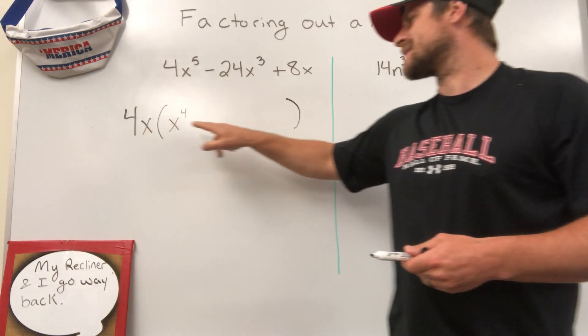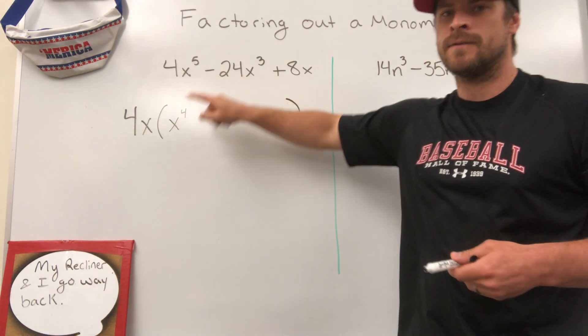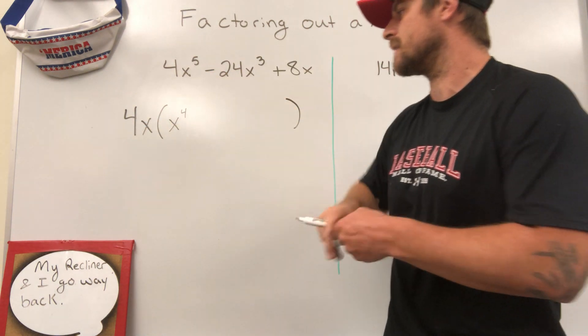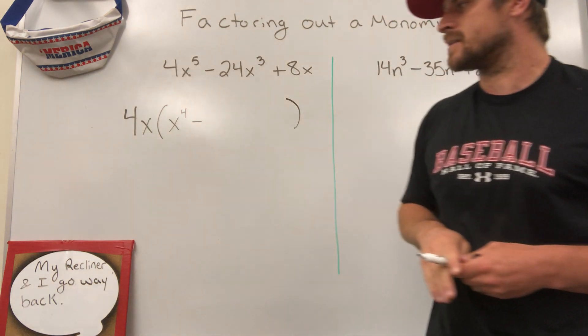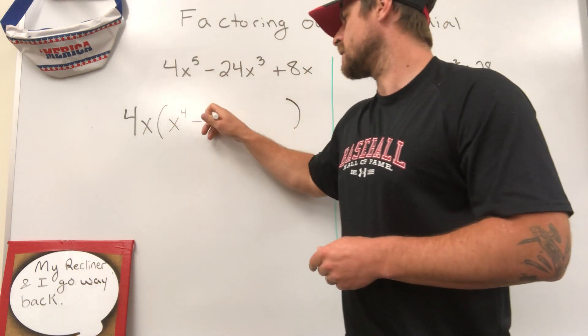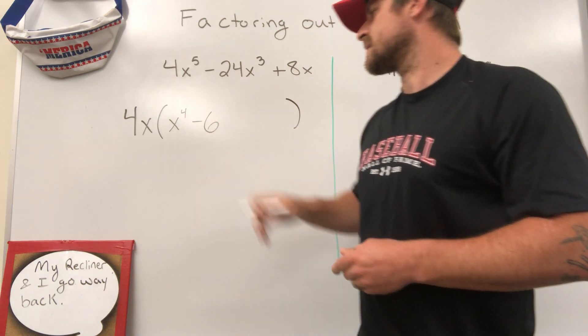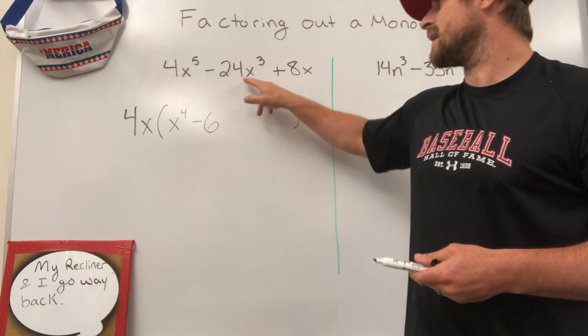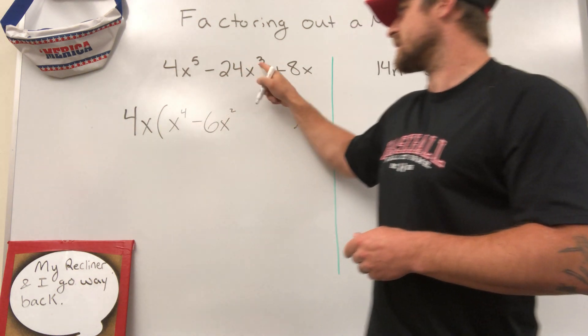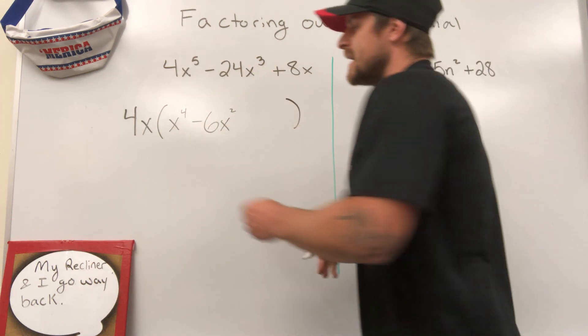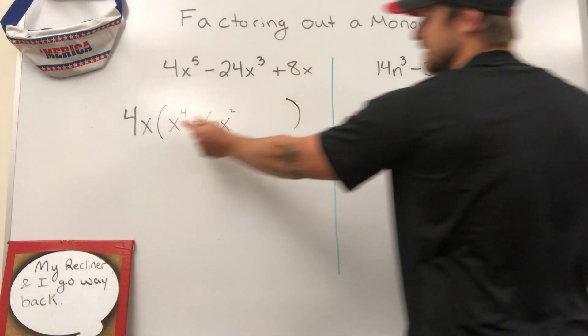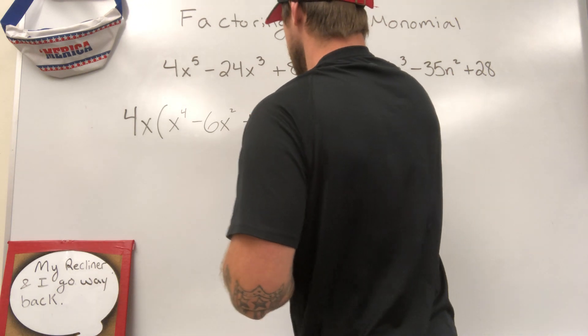Now I'm going to say 4x times what would make negative? A positive times a what would make a negative. We know it's got to be a negative answer. 4 times what makes 24? Six. x times what makes x to the third? We would have to say x squared. Two plus one would make the three. And last but not least, 4x times what makes positive 8x? 4x times two.